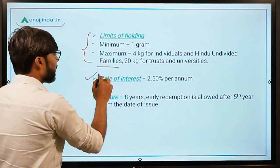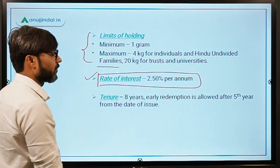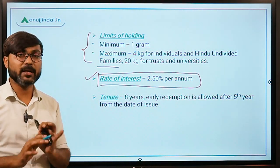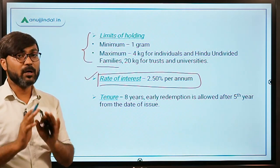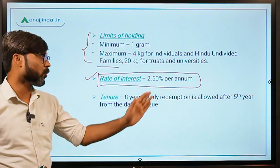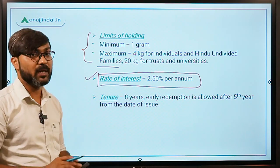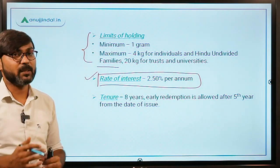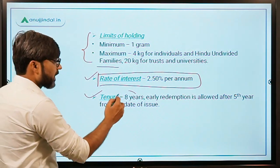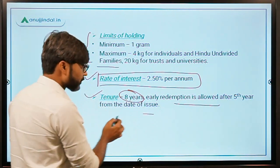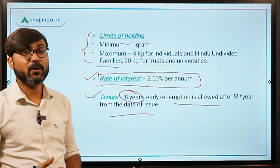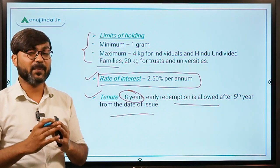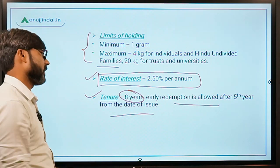The rate of interest on these bonds is a flat 2.50 percent per annum. It does not fluctuate with gold prices — it is a fixed 2.50 percent per annum. The tenure of the bonds is 8 years, and early redemption is allowed only after a period of 5 years from the date of issue.